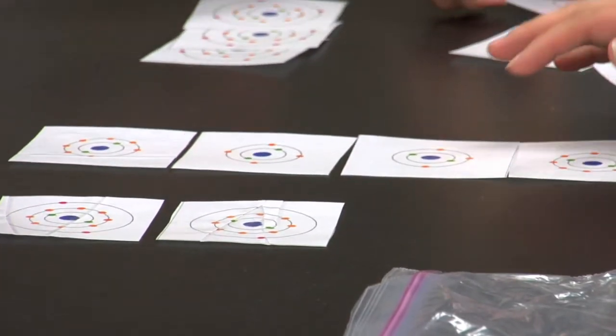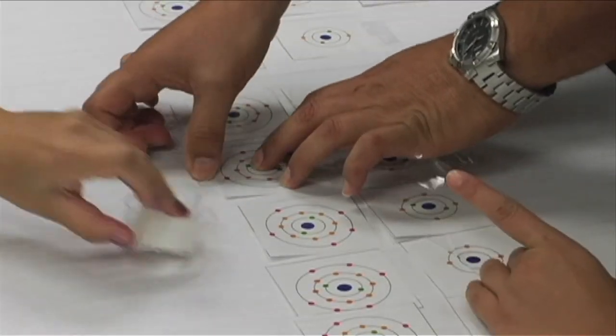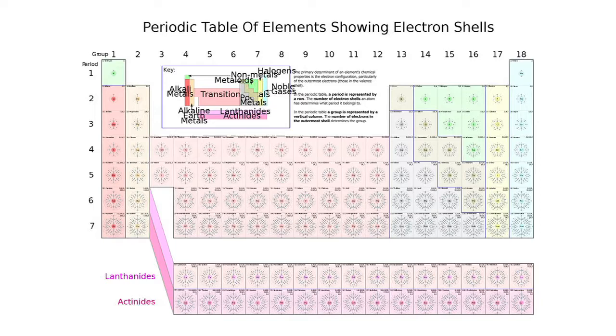We hope you enjoyed the Rings and Dots Lab. Now that you found your own sorting strategy, let's discuss the sorting strategy of the periodic table. The periodic table of elements is organized as follows.